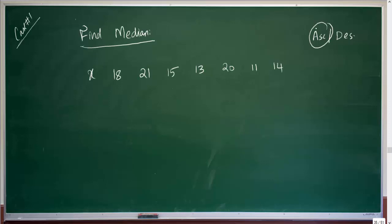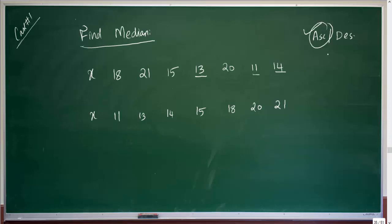I'm going to arrange the data in ascending order. So the first number is 11, the second is 13, the third is 14, the fourth is 15, the fifth is 18, the sixth is 20, and the seventh is 21. We have now ensured the data is in ascending order.